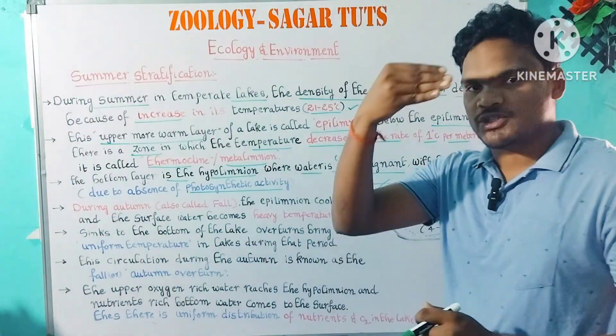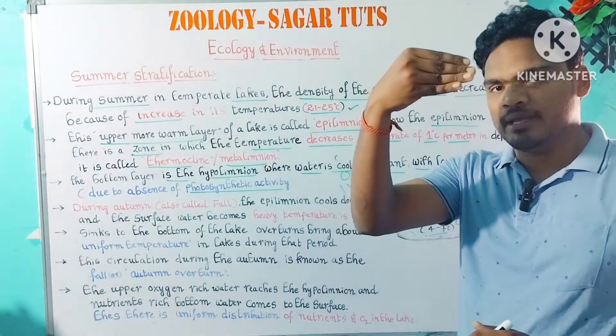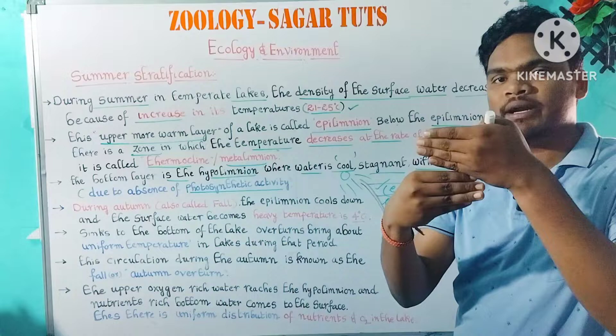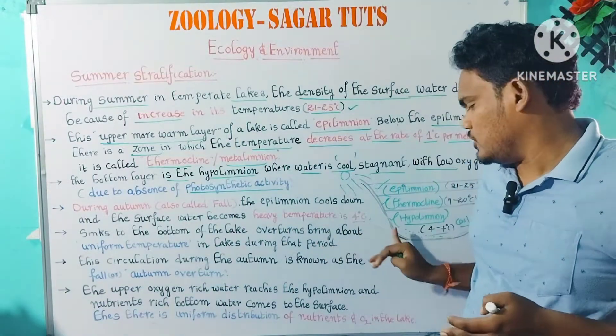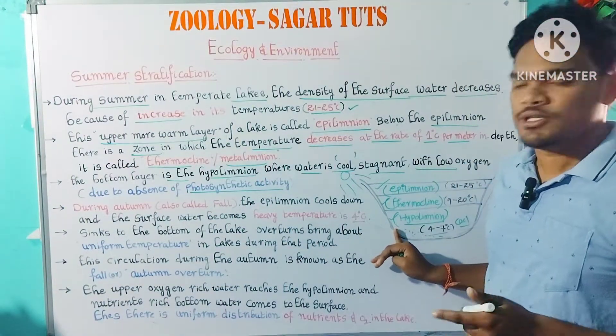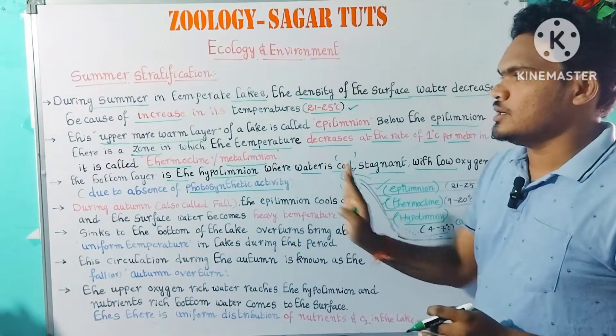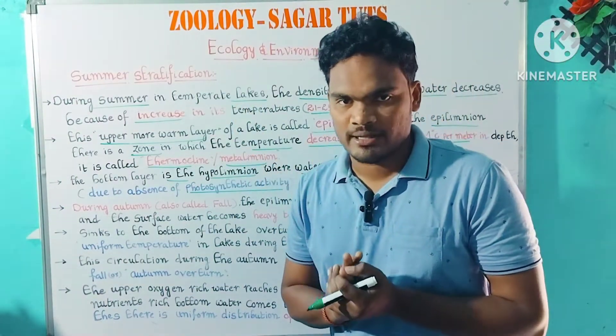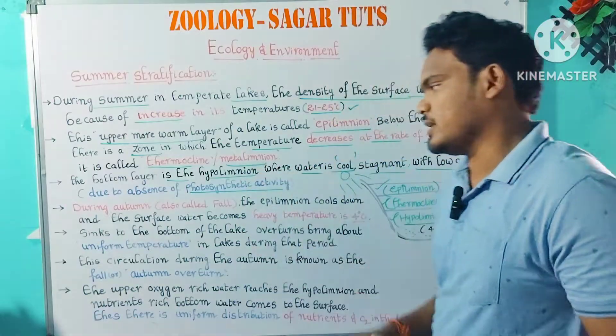So the three layers are: first, epilimnion; then metalimnion, which is the thermocline; and then hypolimnion. These are the three layers during summer stratification.